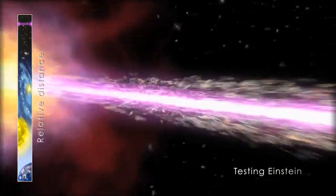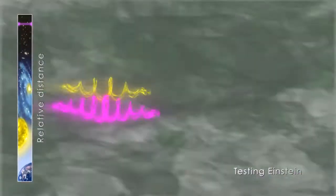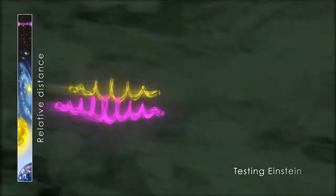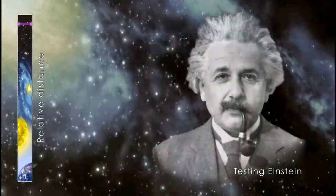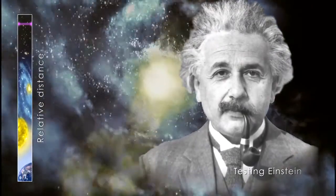Fermi looks at gamma rays, the highest energy form of light, and it just surprised everyone with a discovery about the fabric of space and time. Because Fermi saw no delay in the arrival time of the two photons, it confirms that space and time is smooth and continuous, as Einstein had predicted.